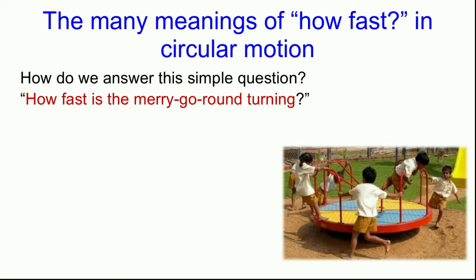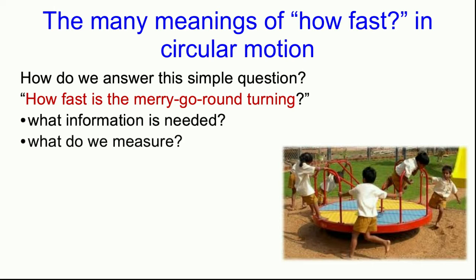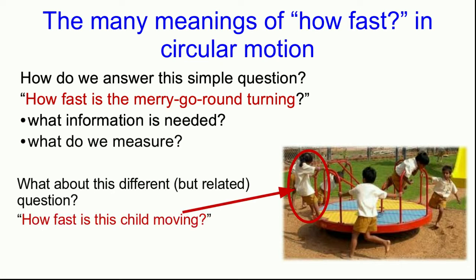Let's think about a merry-go-round turning with some children on it. And we can ask a very simple question. How fast is the merry-go-round turning? Well, even though that's a simple question, there are several different ways that we can ask it. So let's think about what information is needed and what we measure to answer it. And notice that this is actually a rotational motion if we're talking about the merry-go-round. But basically, the answers to those questions are going to be the same as the answers to the related question, which is how fast is this child riding the merry-go-round moving?